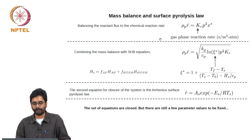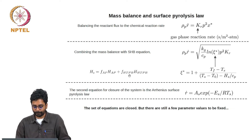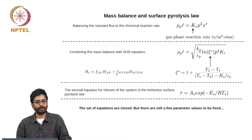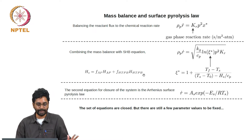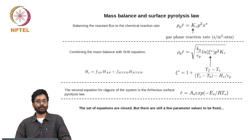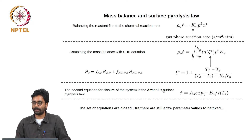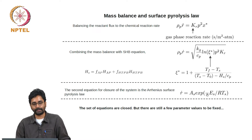You can combine this with the surface heat balance equation and you will get an expression of this kind. The surface enthalpy for pure AP is the enthalpy of decomposition of AP. For a mixture of AP and HDPB, it is a mass-weighted average of the enthalpy of decomposition of AP and HDPB. The other equation used to close the system is the pyrolysis law for the AP at the surface, which says that the burn rate is an Arrhenius function of the surface temperature.